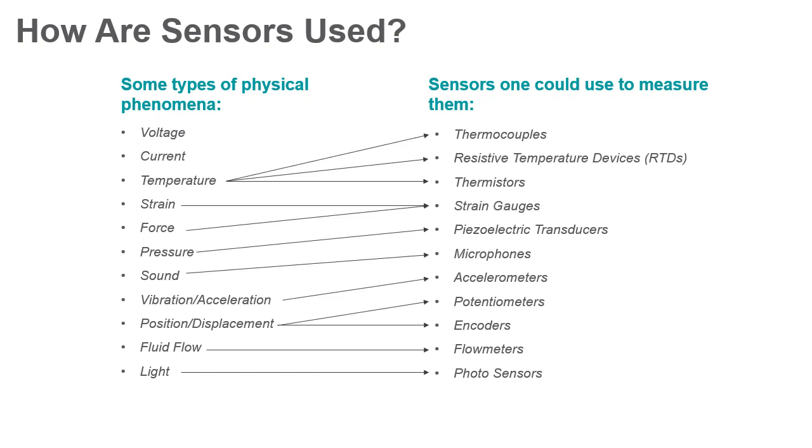A few applications include measuring conditions, confirming proper positioning of equipment, and automating machine movement. Different sensors have been created to measure various types of physical phenomena. For example, to measure temperature, one might use a thermocouple or a thermistor. And to measure light, one might use a photosensor.